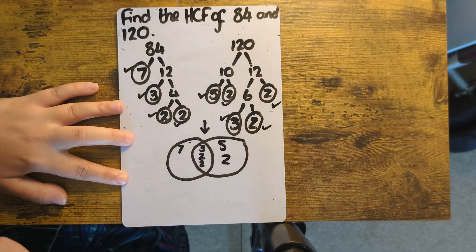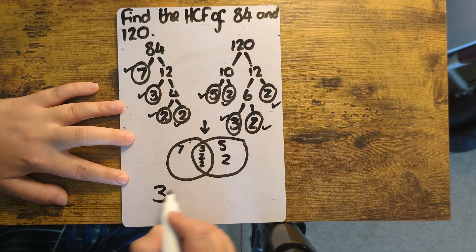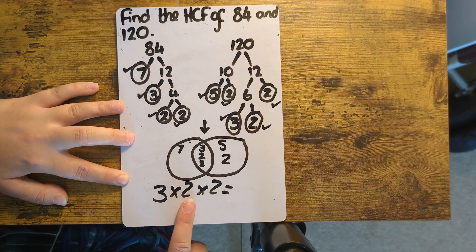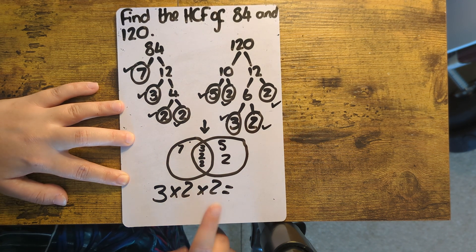Again for the HCF, I just need the middle part of the circle, so 3 times 2 times 2. 3 times 2 is 6, times 2 is 12.